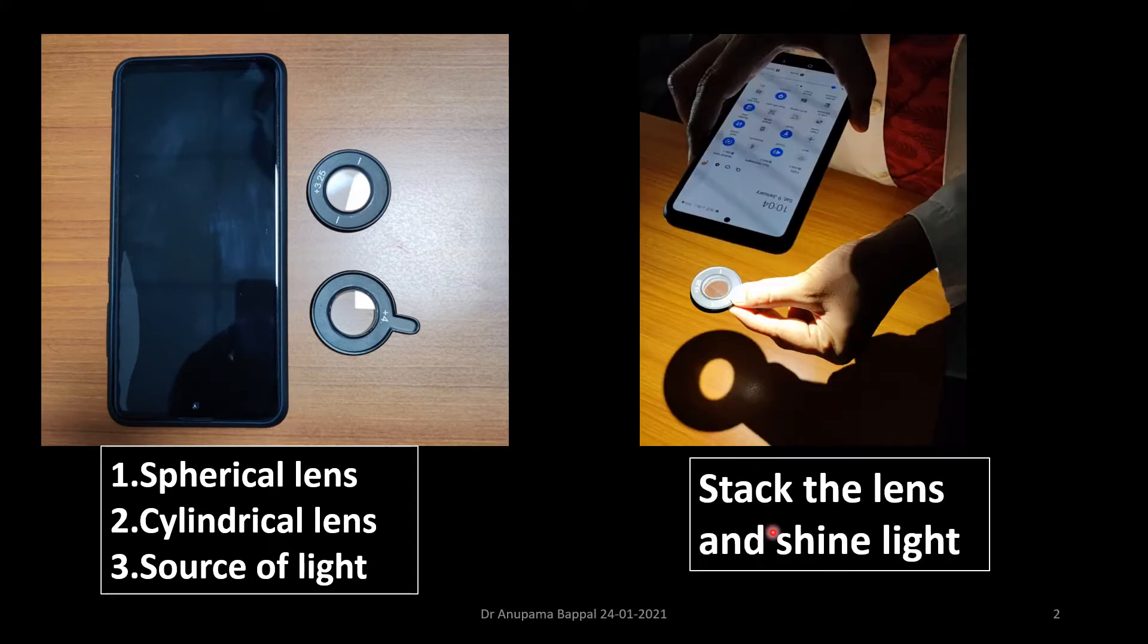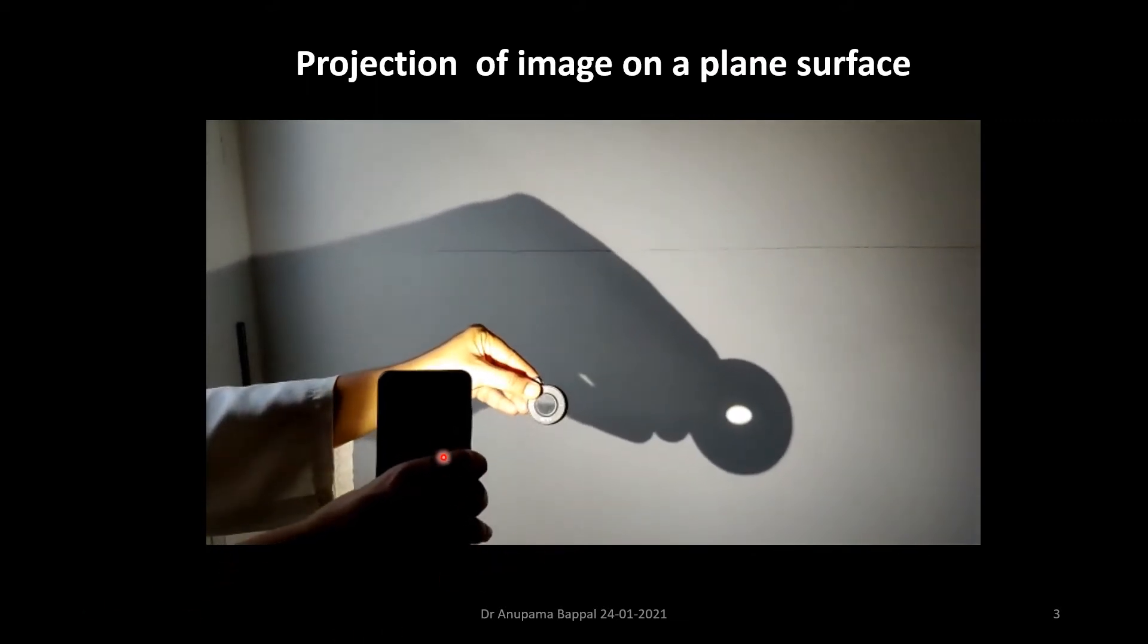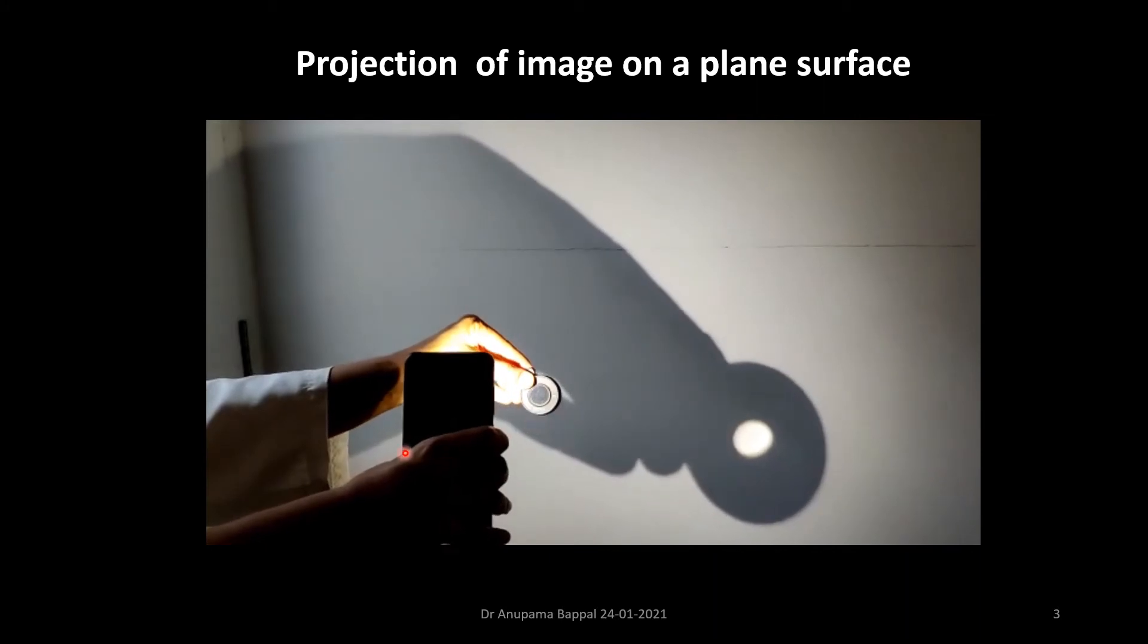So stack the lens and shine the lights to get the image on a surface. It's very simple. This video would demonstrate how it is done. Mobile source of light, stack lens, shine the light and then you would get an image on the screen. Just make sure that the source of light and the lens is all in the same straight line.